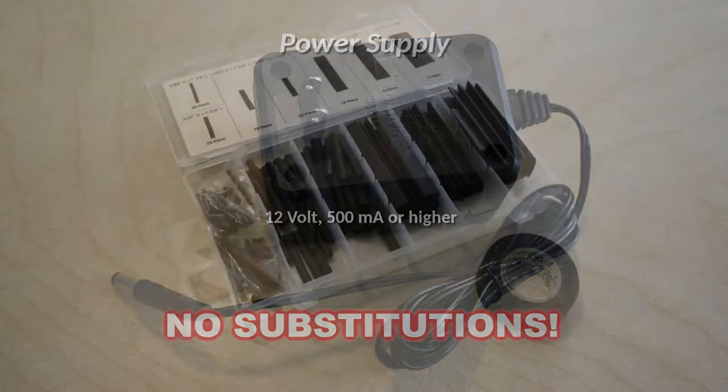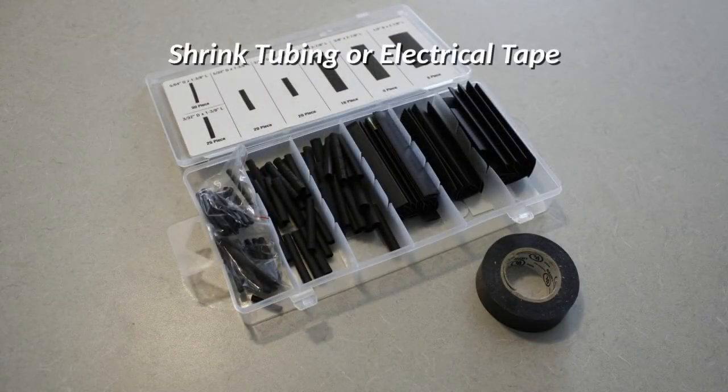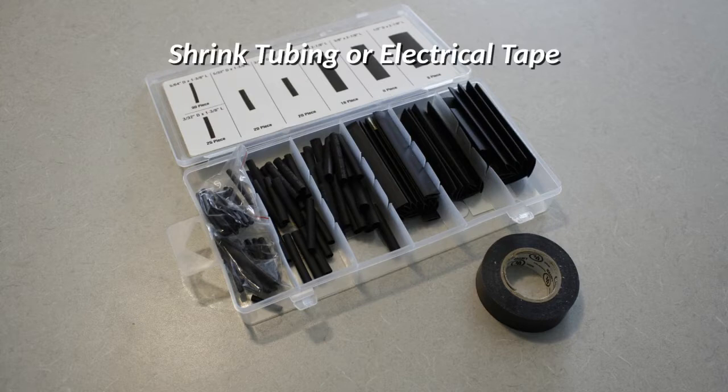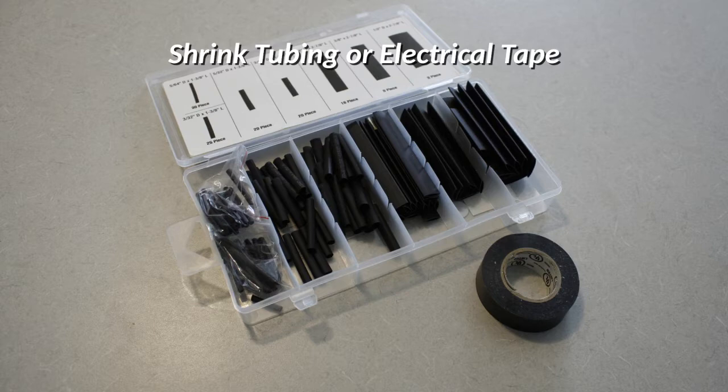Finally, you'll want to get some shrink tubing to cover certain electrical connections. You can substitute electrical tape for this, but I find that over time, electrical tape comes loose and can smear adhesive.